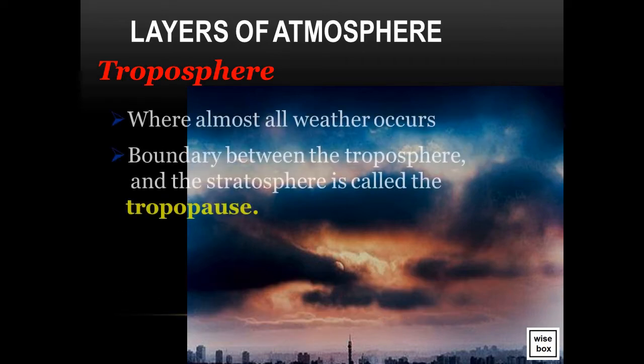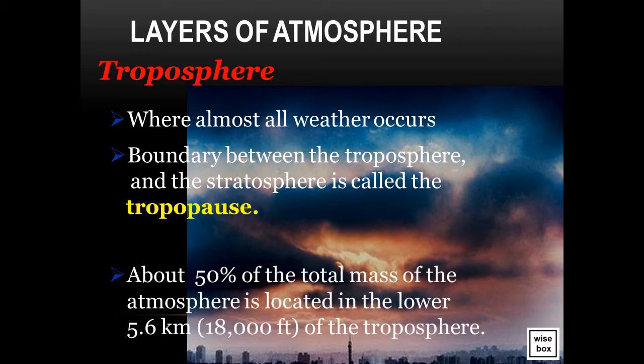The troposphere is where almost all weather occurs. The boundary between the troposphere and the stratosphere is called the tropopause. About 50% of the total mass of the atmosphere is located in the lower 5.6 kilometers, or 18,000 feet, of the troposphere.